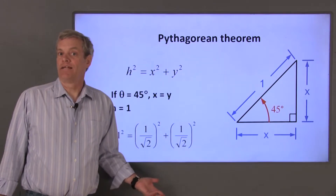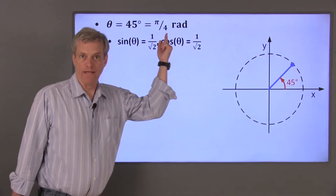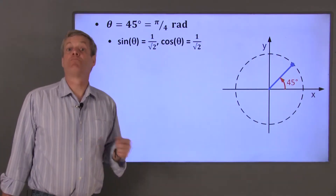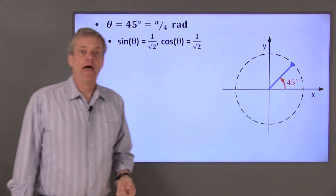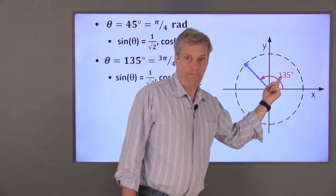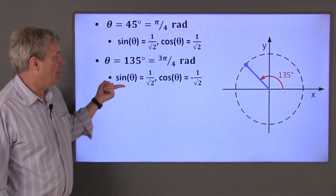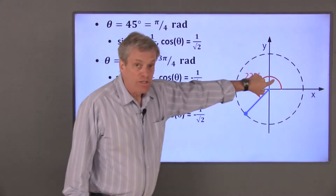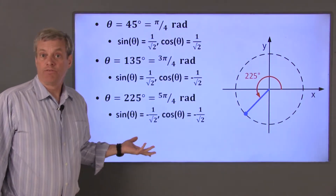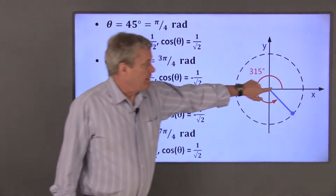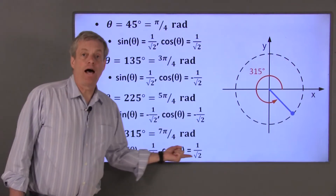Now let's look at some examples with sine and cosine values that are based on 45 degree angles. I'll start with theta equal to 45 degrees, which is pi over 4 radians. Both the x and y values in this case are the same, and they're both equal to 1 over the square root of 2, so both the sine and the cosine of 45 degrees are 1 over root 2. Adding 90 degrees to 45 gives 135 degrees — the x value is now negative, so the cosine of 135 degrees is negative 1 over square root 2, while the sine of 135 degrees is still positive. When theta is 225 degrees, the x and y values are now both negative 1 over square root 2, so the sine and cosine of 225 degrees are both negative 1 over square root of 2. Finally, when theta is equal to 315 degrees, the sine of theta is negative 1 over square root of 2, and the cosine of theta is positive 1 over square root of 2.